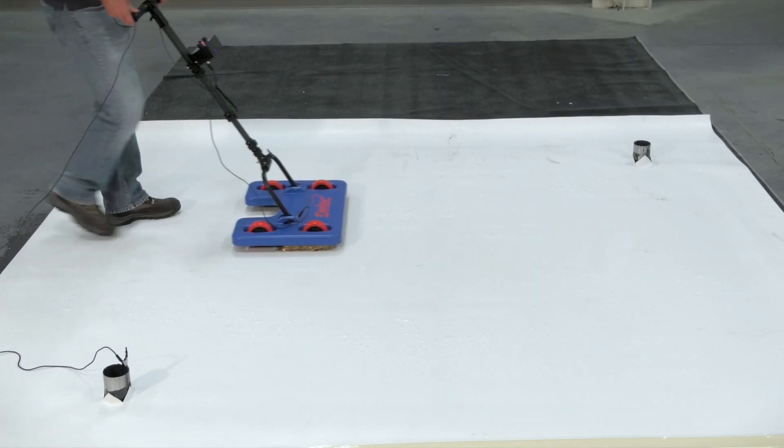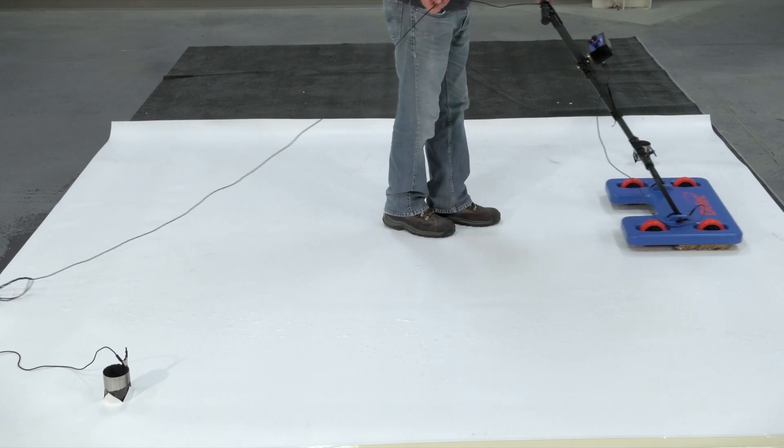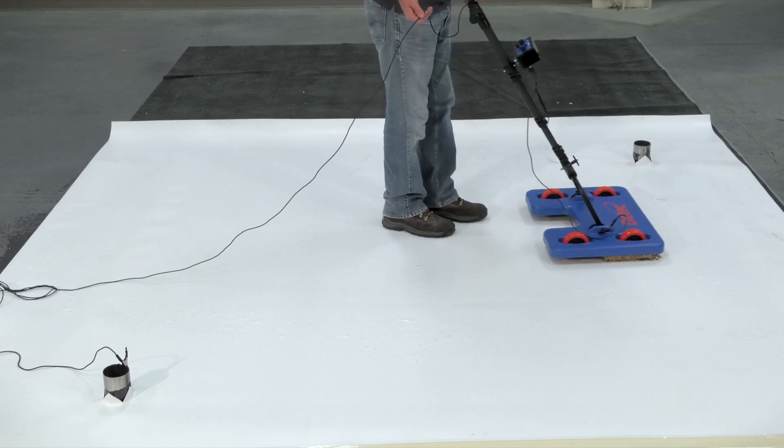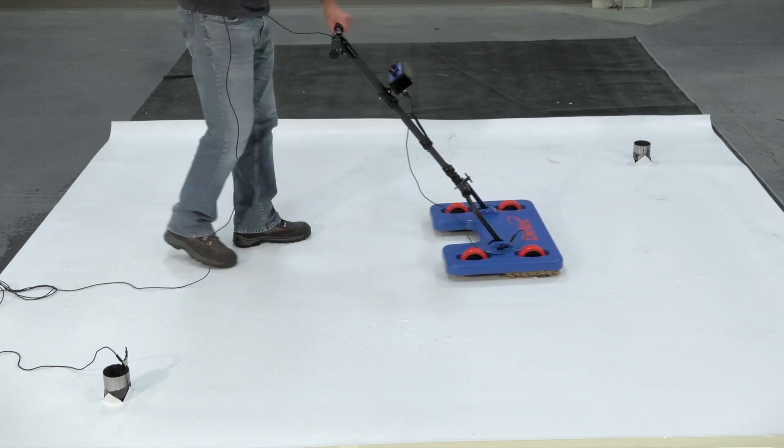After a ground connection has been established and the area has been properly wetted, ELD testing can commence. Testing should first be performed around drains and low spots, then proceed to the remaining areas.